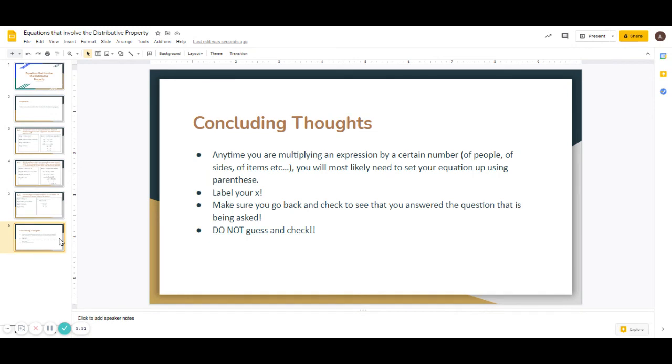Concluding thoughts. Anytime you are multiplying an expression by a certain number of people, of sides, of items, etc., you will most likely need to set your equation up using the parentheses. You also want to label your x. And you also need to make sure that you go back and check to see that you answered the question that's being asked. And lastly, a big one. Do not guess and check. Please, don't do that.